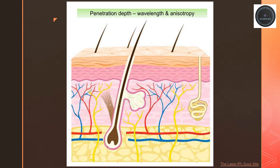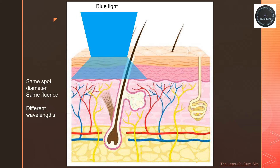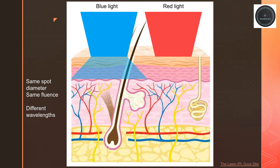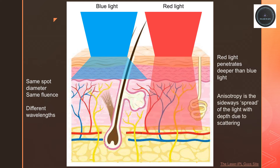First, let's consider wavelength and anisotropy. Blue light cannot penetrate too far into the skin. It is strongly absorbed by the melanin, which is there to prevent penetration of potentially damaging blue photons. Red and infrared light, however, can penetrate much further into the skin, even reaching below the dermis. Anisotropy is a measure of how far the light spreads out in the skin, and this is wavelength dependent. Blue light tends to spread out much further than red light.